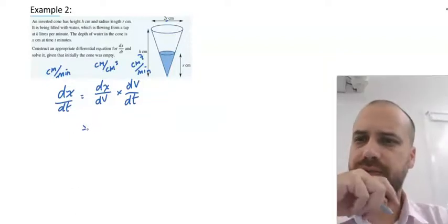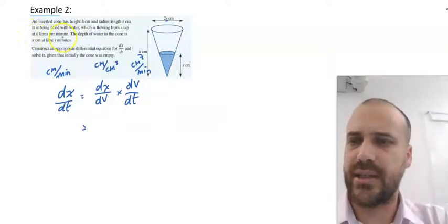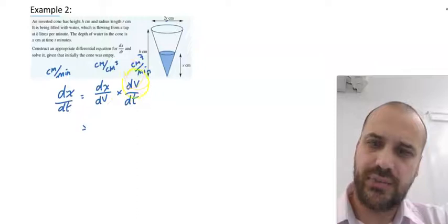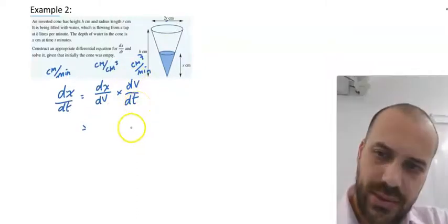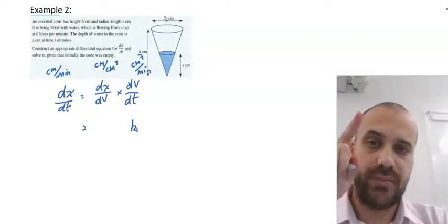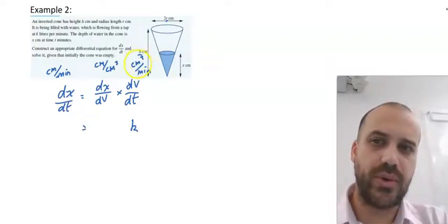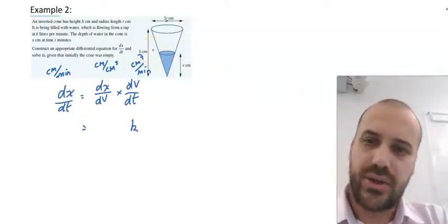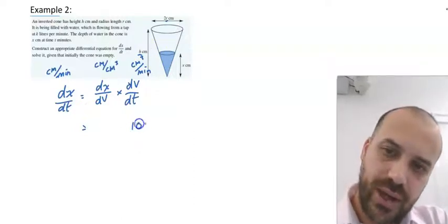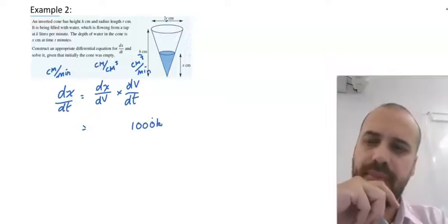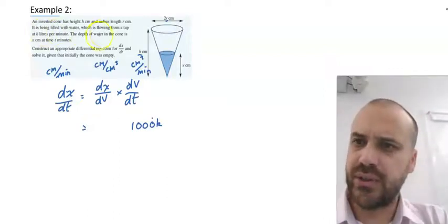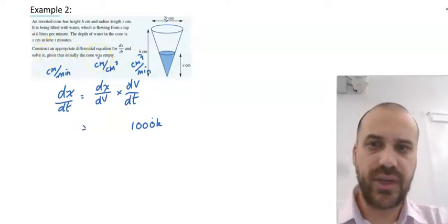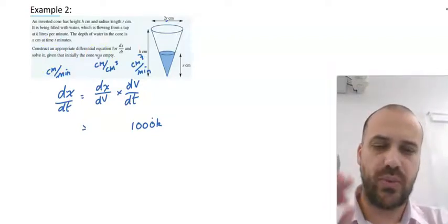Now what do I have? It says flowing from a tap at k liters per minute. If it's flowing at k liters per minute, this rate of change of volume with respect to time is going to be k liters per minute. But that's not the units I want to work in. I want to work in centimeters cubed per minute. There's a thousand centimeters cubed in a liter. So it's changing at a rate of 1,000k. Given that the initial cone is empty, the fill rate here, the rate at which the volume is changing is 1,000k.